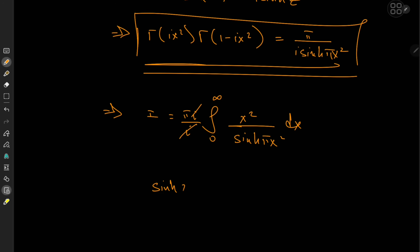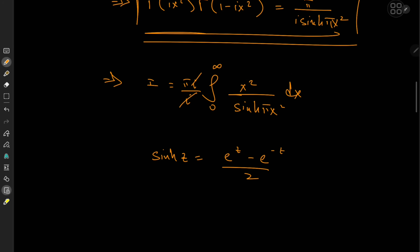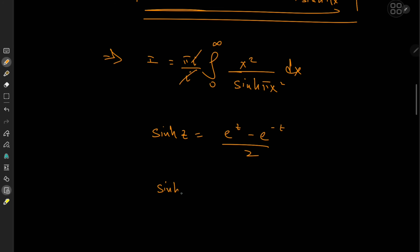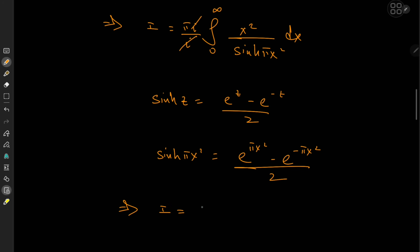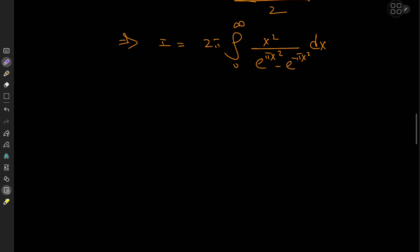The hyperbolic sine function is defined as sinh(z) = (e^z − e^(−z)) / 2, so sinh(πx²) = (e^(πx²) − e^(−πx²)) / 2. This implies that the target integral I is now 2π times the integral from 0 to infinity of x² / (e^(πx²) − e^(−πx²)) dx.